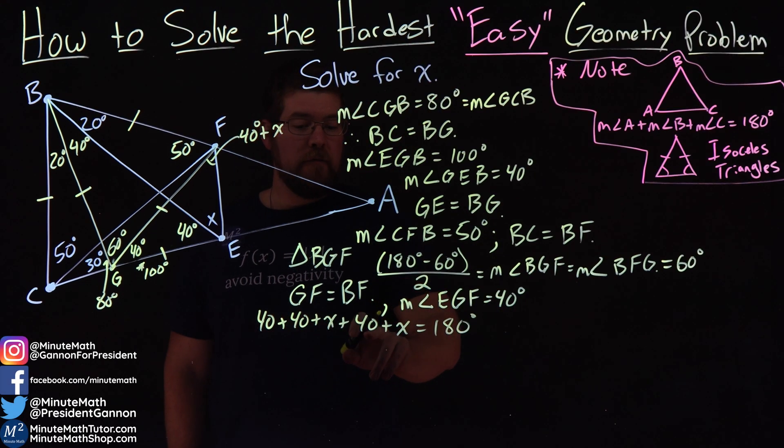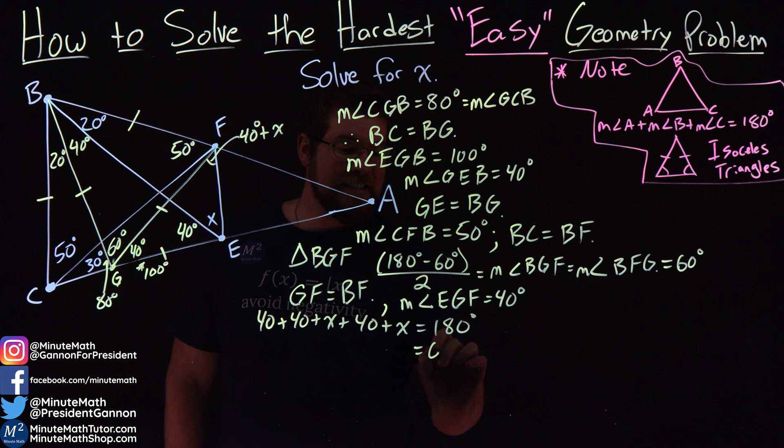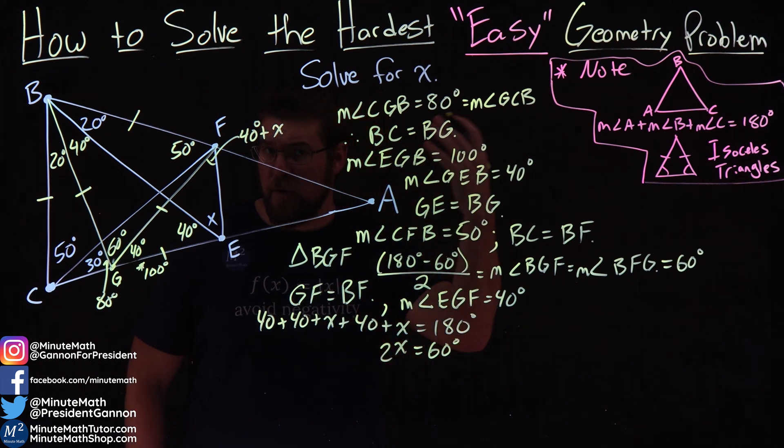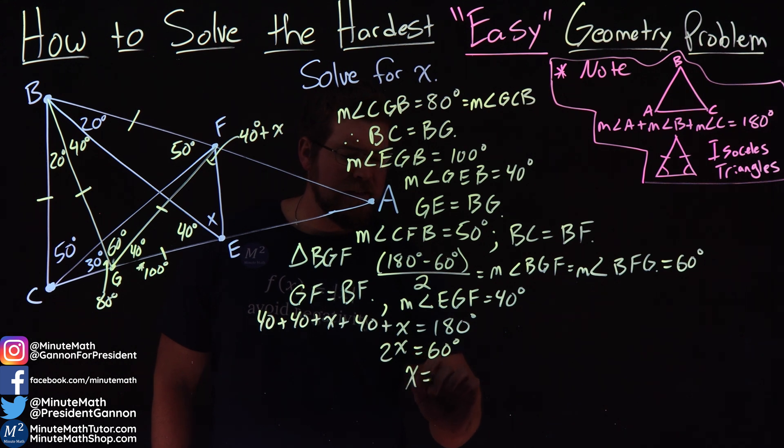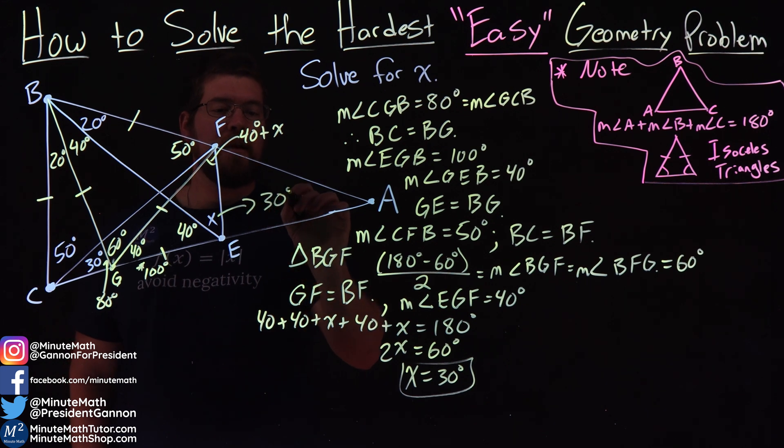Well, 40, 40, 40, we add them up, that gets us 120. Subtract that from both sides and we have 60 over here. And x and x is 2x. Divide both sides by 2. And x equals 30 degrees. And there we have it. Our value for x here is 30 degrees.